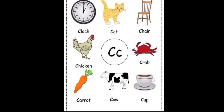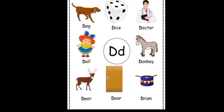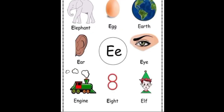C: cat, chair, chicken, crab, carrot, cow, cup. D: dog, dice, doctor, doll, donkey, deer, door, drum. E: elephant, egg, earth, eat.